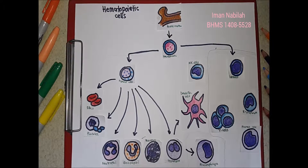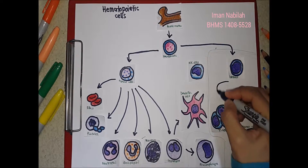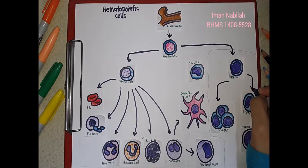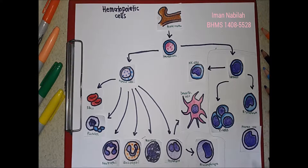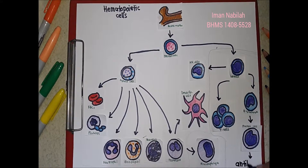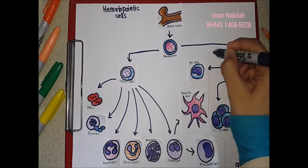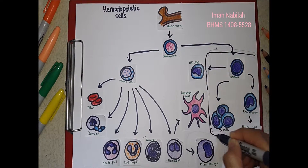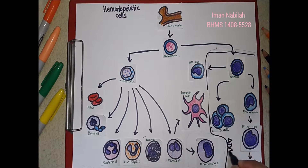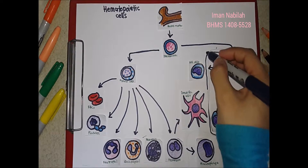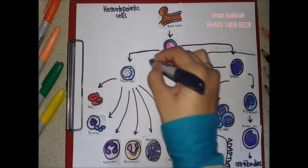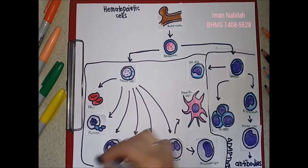Lymphoid cells give rise to cells essential to adaptive immunity, which are T lymphocytes, B lymphocytes, and natural killer cells. B lymphocytes will turn into plasma cells and produce antibodies. These are the adaptive immune system cells, while these are the components of the innate immune system.